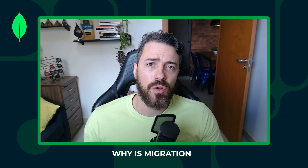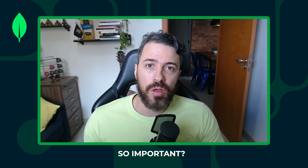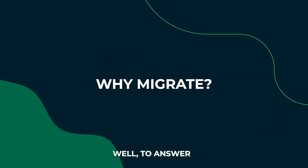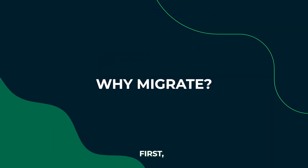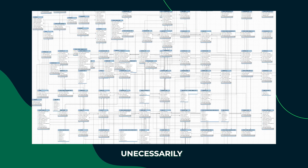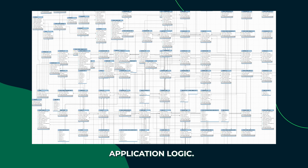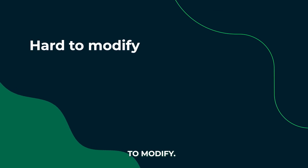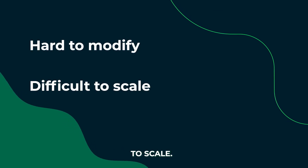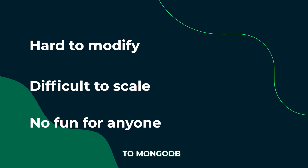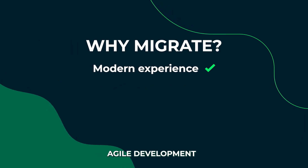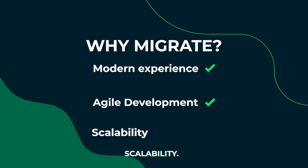Now that we've covered the advantages of MongoDB, the question is: why is migration to MongoDB so important? What benefits can a migration offer? To answer this, let's talk about the challenges of legacy relational systems. They are often unnecessarily complex, with rigid schemas, database-level code, and complicated application logic. This makes them hard to modify, difficult to scale, and honestly no fun for anyone involved. Migrating to MongoDB gives you a modern experience, agile development, and real scalability.